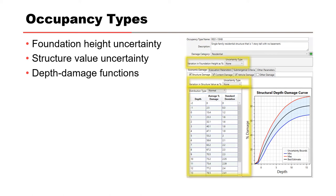Depth damage functions — this is the big one. This is how we do it in the Corps. You have your occupancy type and all structures within that occupancy type use the same depth-damage function. If you have a structure that needs a different depth-damage function for structure value or content values, you would create a new occupancy type for that structure.